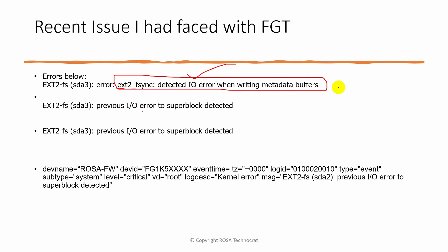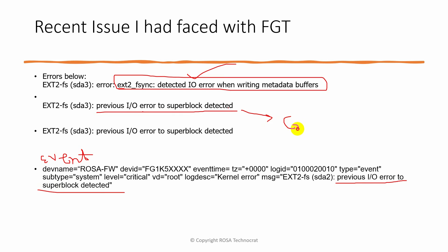You may notice 'previous IO error to superblock detected' in your event logs. If you don't see it in event logs, it might be in crash logs. If the critical notice or if your logging is not enabled, then this will come under crash log. These are the different ways you might notice this error - either in crash log or in event log - and the level of the log will be critical.